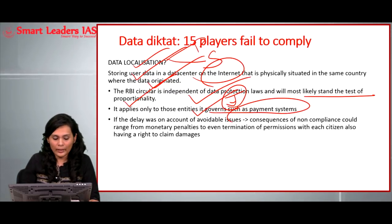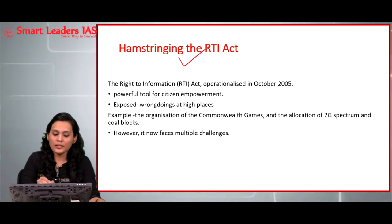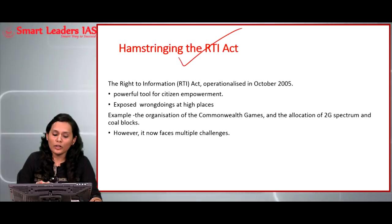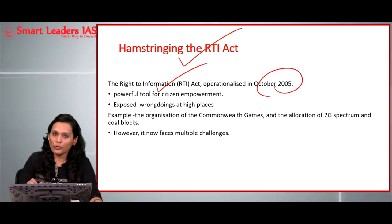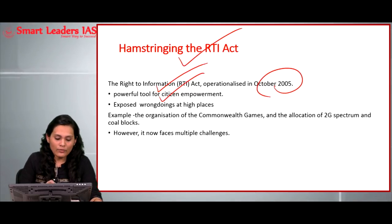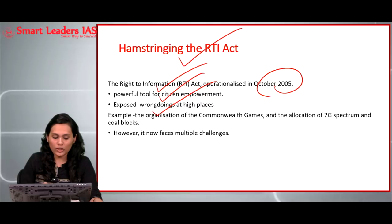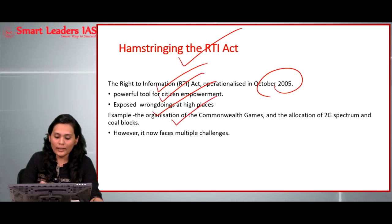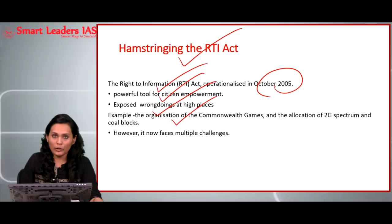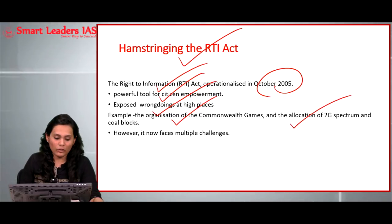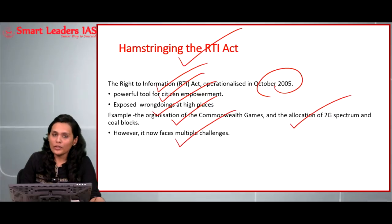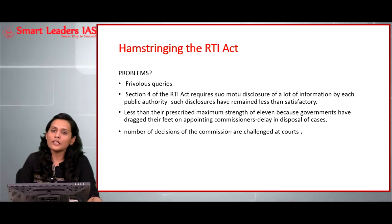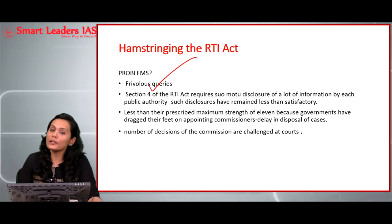The next issue is 'Hamstringing the RTI Act.' The Right to Information Act was operationalized in the year 2005 and is a very powerful tool for citizen empowerment, exposing wrongdoings at very high places. Some significant exposures include the organization of the Commonwealth Games and the corruption involved therein, and the corruption charges of the 2G spectrum case. However, the act faces multiple challenges. The first problem is the increasing number of frivolous queries — complaints not just from serious right activists but also from unsatisfied government servants.